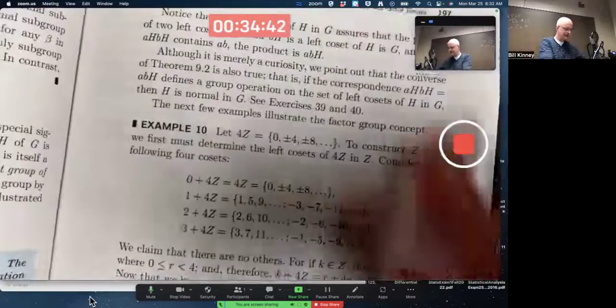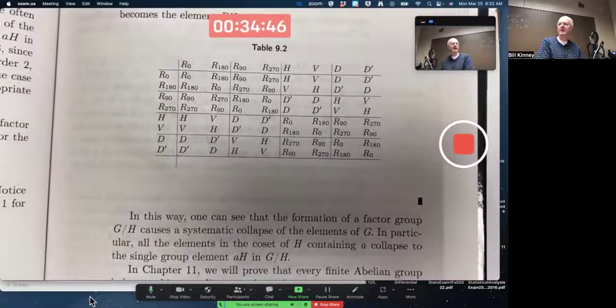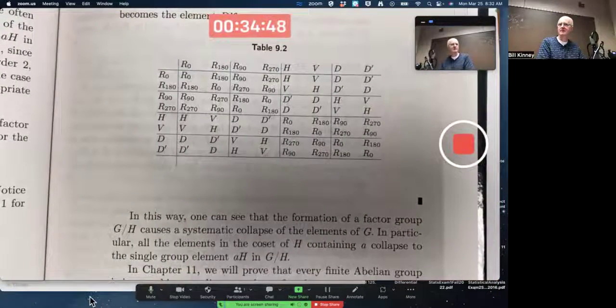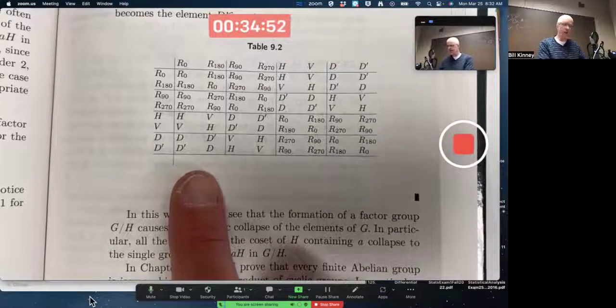It's very insightful that you see how factor groups arise naturally by thinking about Cayley tables in certain ways. So here, for example, is the Cayley table for D4,